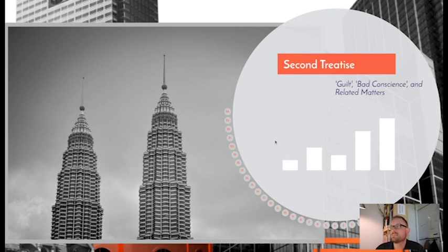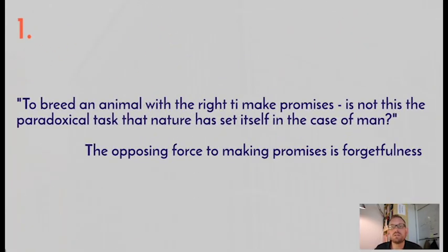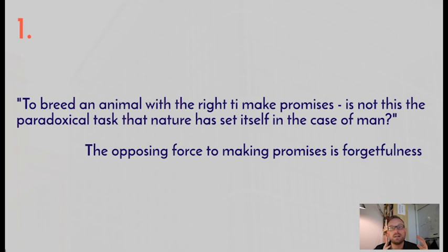The title of that text is 'Guilt, Bad Conscience, and Related Matters.' We're going to see that what Nietzsche offers here is a fuller argument regarding his discussion of the origin of our moral concepts. You'll recall that in the first treatise, Nietzsche distinguished between two sets of moral concepts: good versus evil on the one hand, and good versus bad on the other. This is the distinction between master and slave morality.